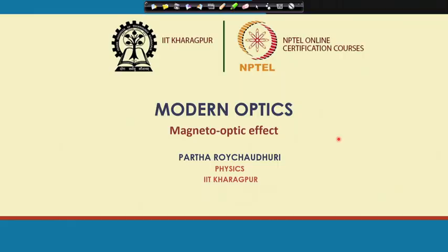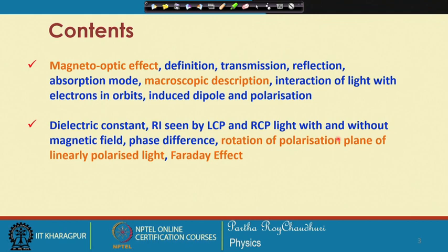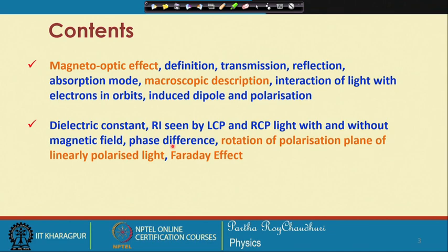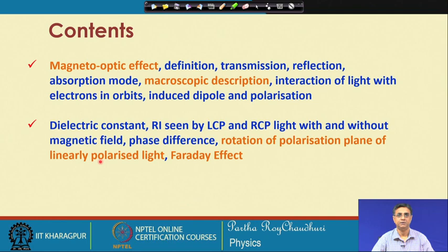We will discuss the magneto-optic effect, covering its basic definition and three categories: transmission, reflection, and absorption modes. We will look at the microscopic description considering the interaction of light with electron orbits and induced dipole polarization, and calculate the dielectric constant and refractive index for left and right circularly polarized light with and without a magnetic field. Then we will examine the phase difference and the Faraday rotation effect.